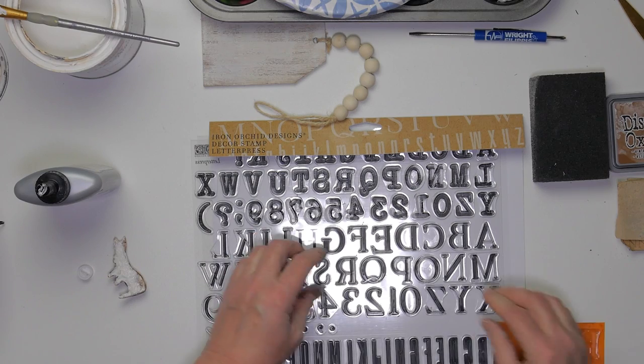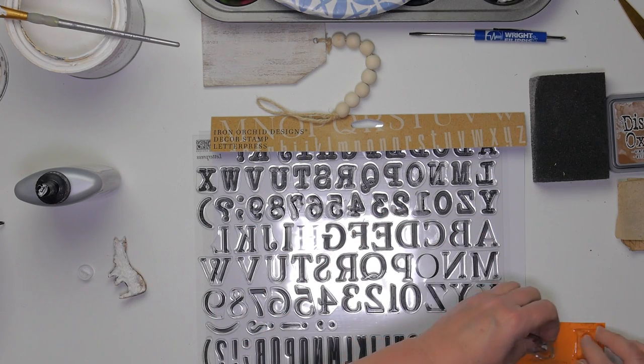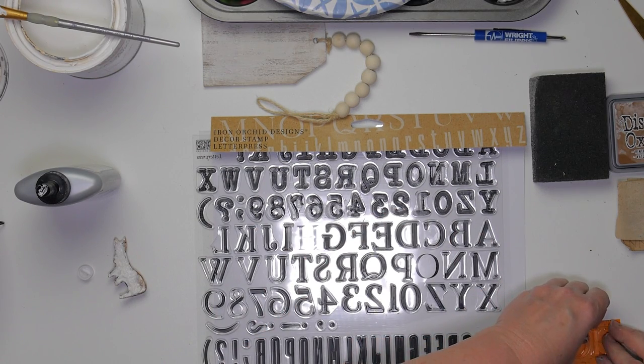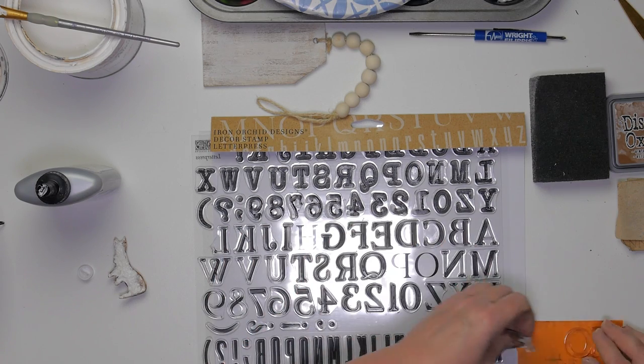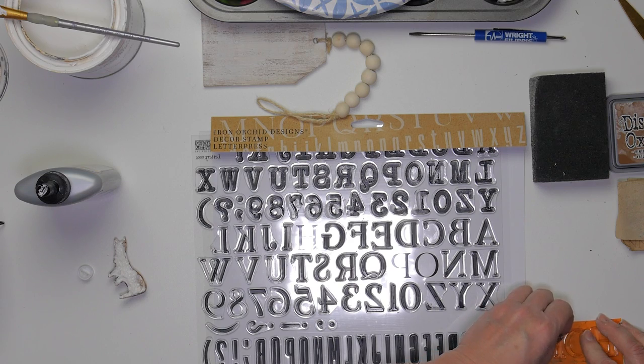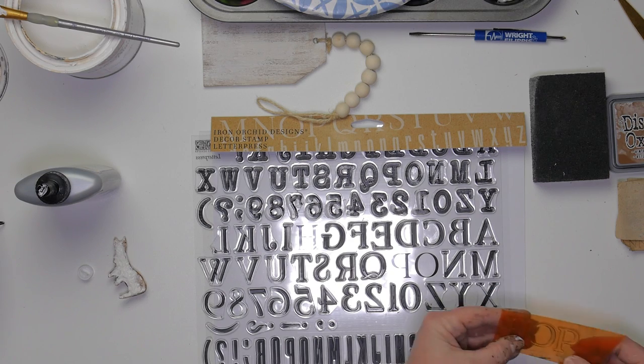I'm using the IOD Letterpress stamp that I picked up at Sweet and Sassy Treasures. I'll put the link in the description box. I spell out the word hop and I'm going to stamp it with black ink and then press it onto the tag.